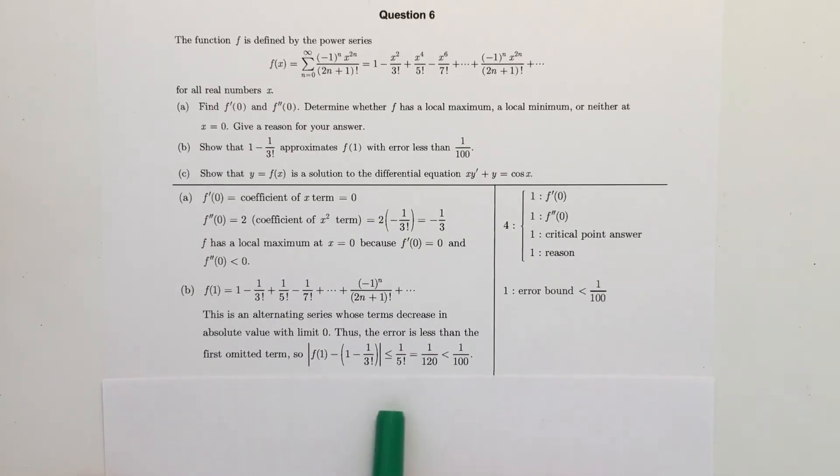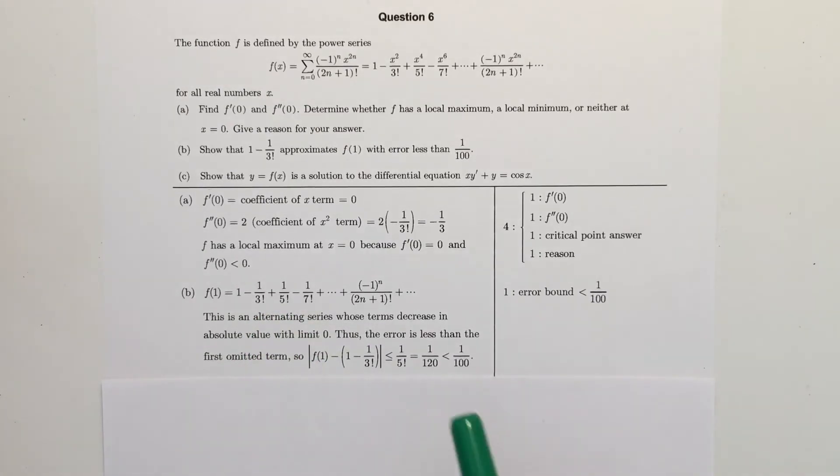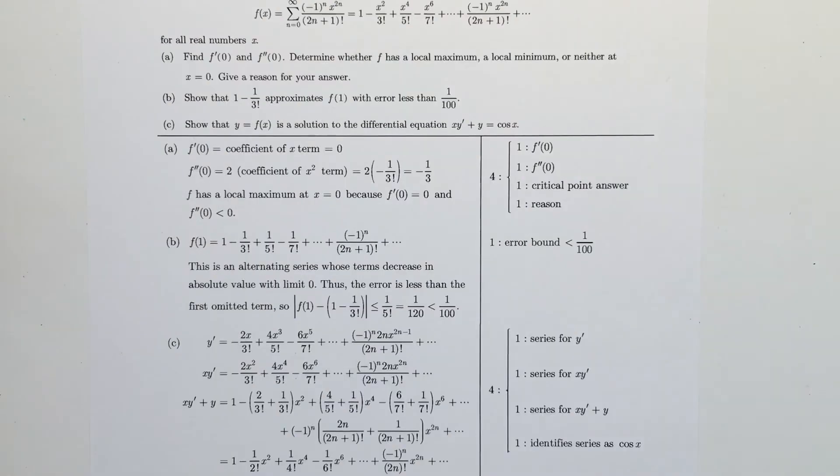And there you have the numerical evidence for why the error is less than 1 over 100. Some common mistakes include using the 1 over 3 factorial term instead of the 1 over 5 factorial term. But just remember that with an alternating series, you always use the term after what is included in your estimation.